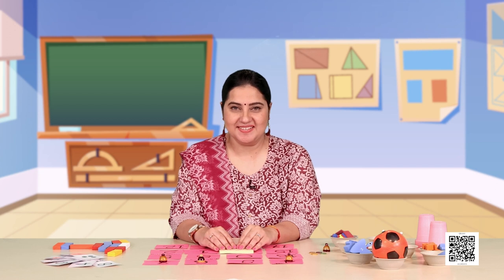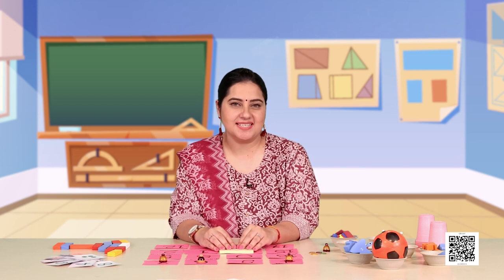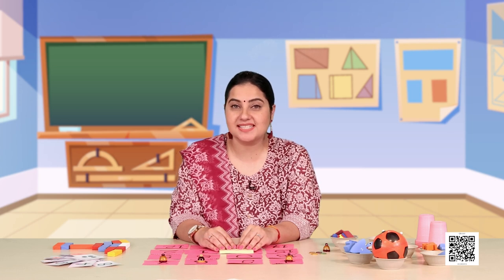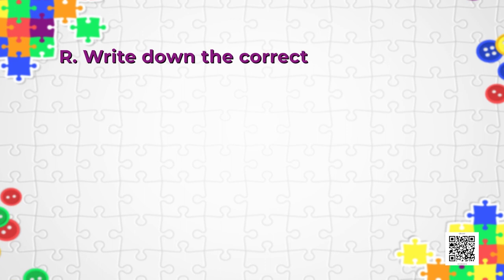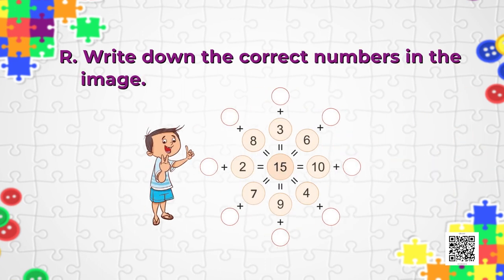I hope you enjoyed adding and subtracting to find the total given in the center. It's time for puzzle R — you've done a lot of work! Write down the correct numbers in the image. You can see some numbers in circles, an equals sign, and a plus sign. Fill the correct numbers in the spaces given. The center circle has 15; for example, 6 plus 9 equals 15. Fill the rest of the circles so that the sum is 15. Have fun!